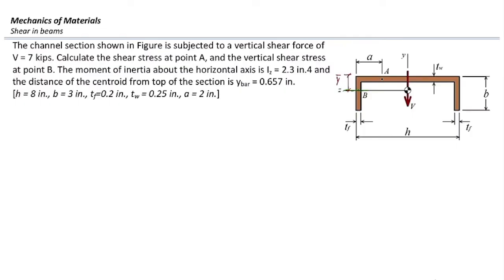This is what we want to practice today. In this problem, the moment of inertia is given as 2.3 inch to the fourth. The distance of the centroid from the top of the section is Y-bar equal to 0.657 inches. I'll start with point B, which is a little bit easier. We need to cut the thin-walled element, make it free, identify the cut area, the thickness, and use them in the shear stress equation.